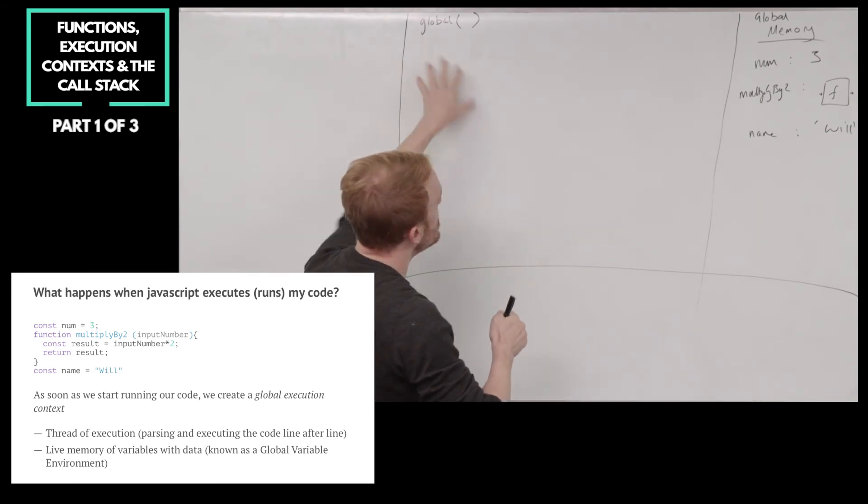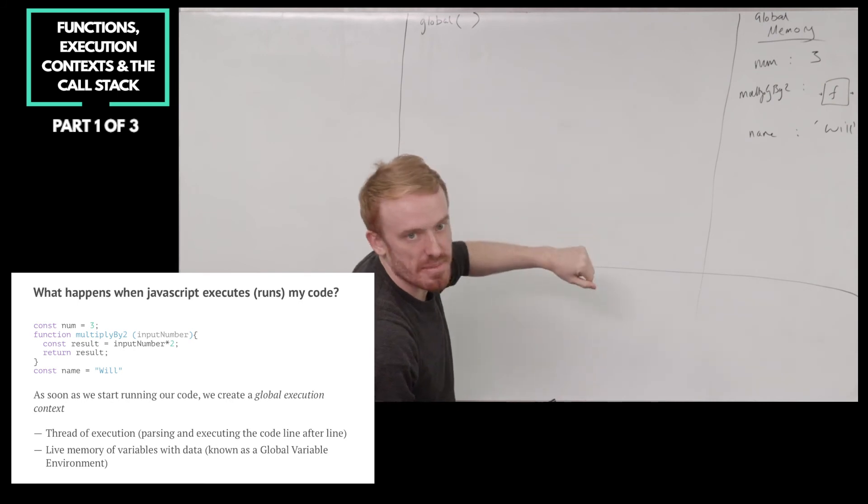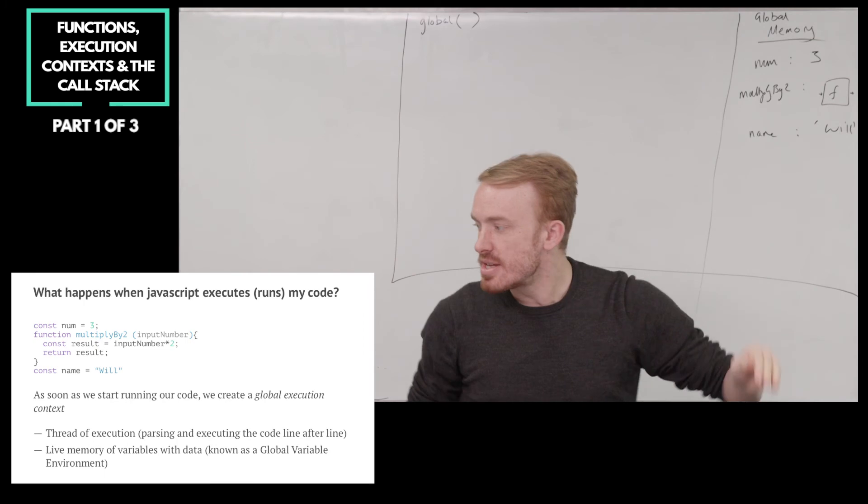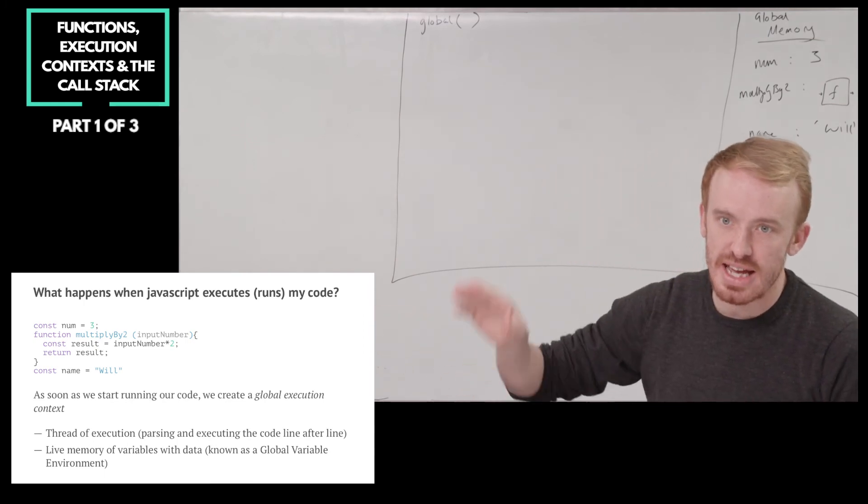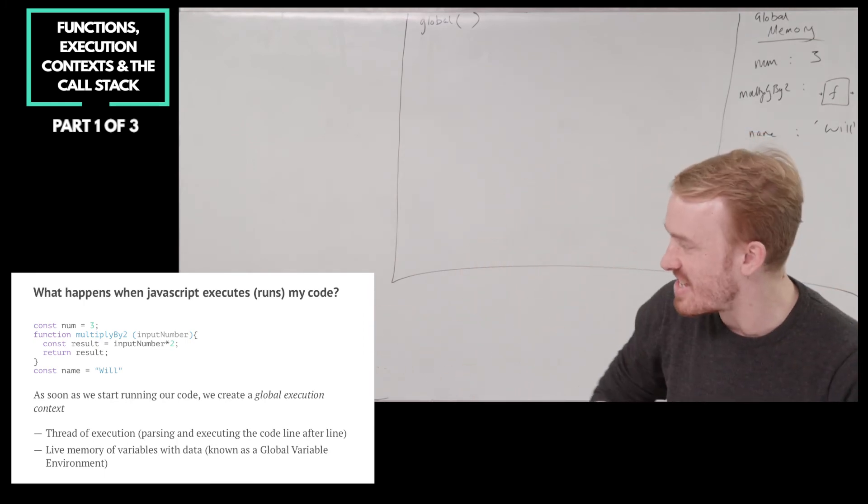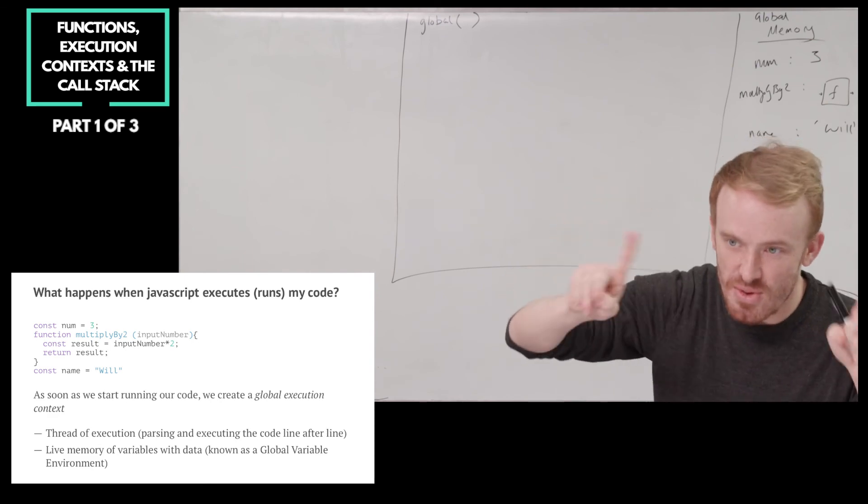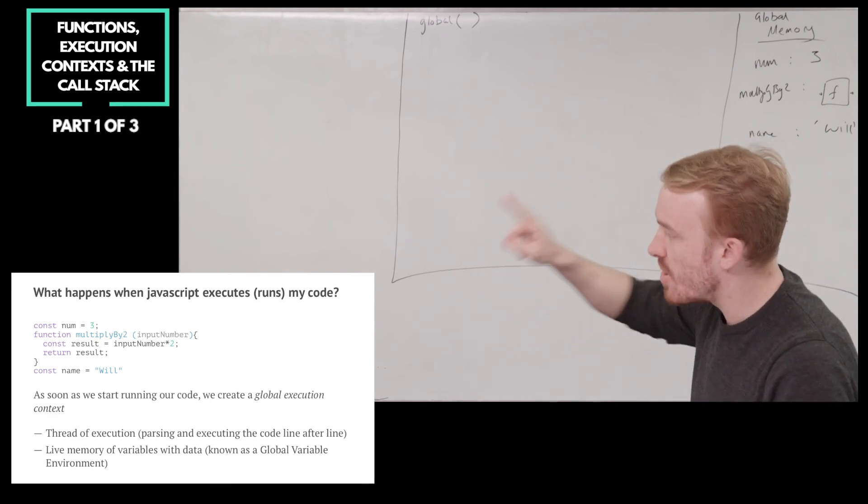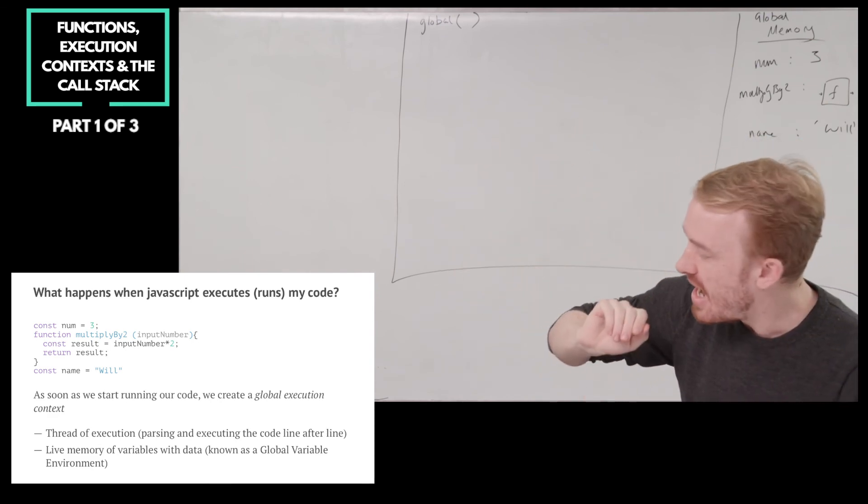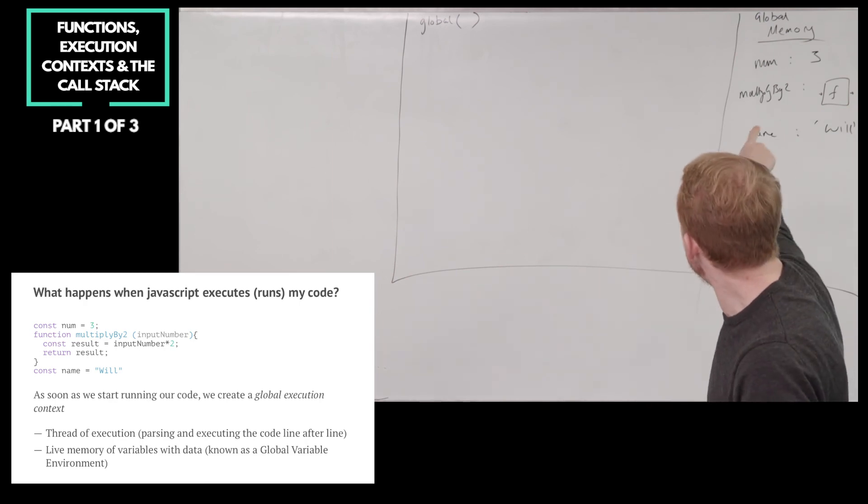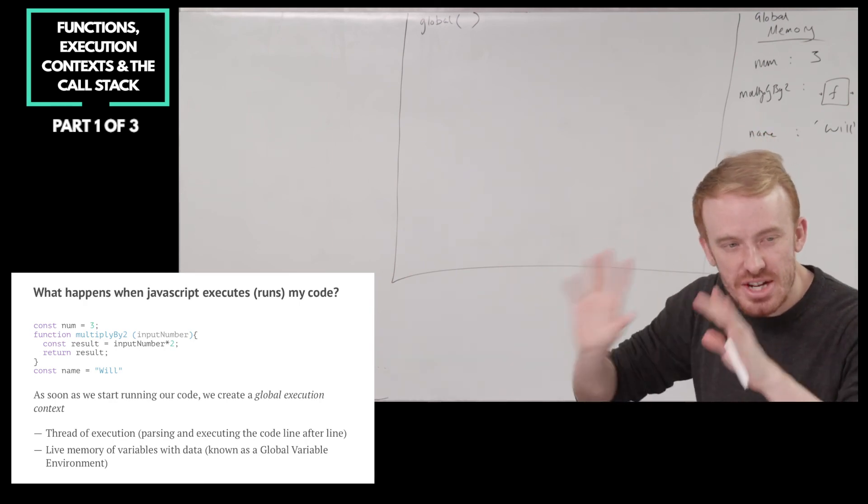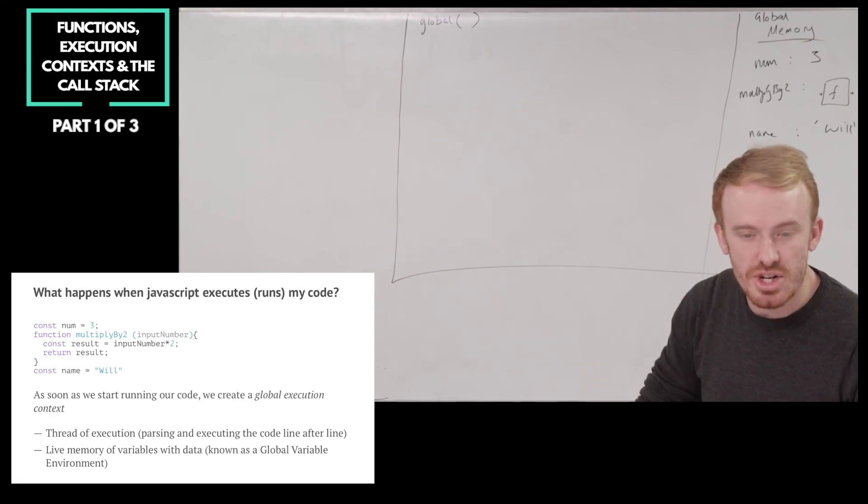We went through it line by line. We didn't write it out. We just stored the stuff in memory. But think of us going through and hitting the code line by line in our thread. Alright. So as soon as we start running our code, we create a global execution context comprising a thread of execution going through our code line by line and a live memory of stuff actually stored.